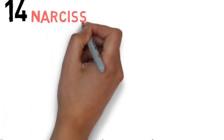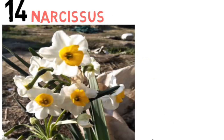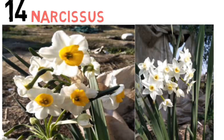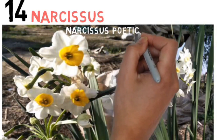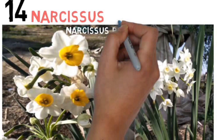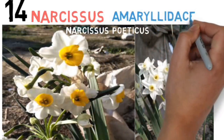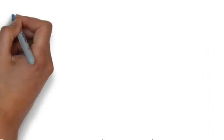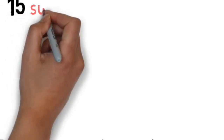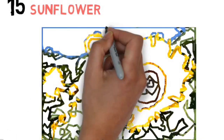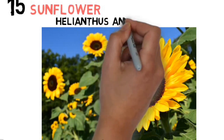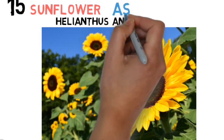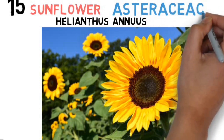Next is narcissus. Its scientific name is Narcissus poeticus and it belongs to the family Amaryllidaceae. Next one is sunflower. Its scientific name is Helianthus annuus and it belongs to the family Asteraceae.